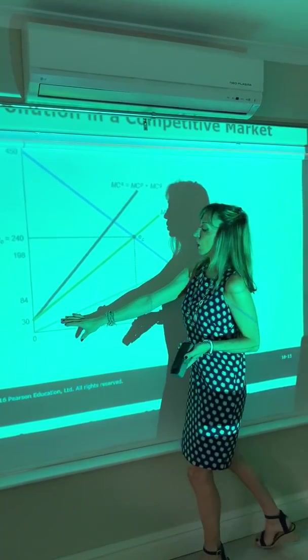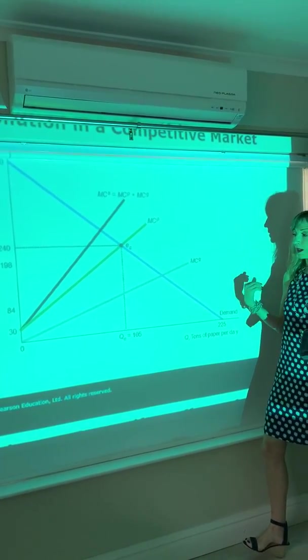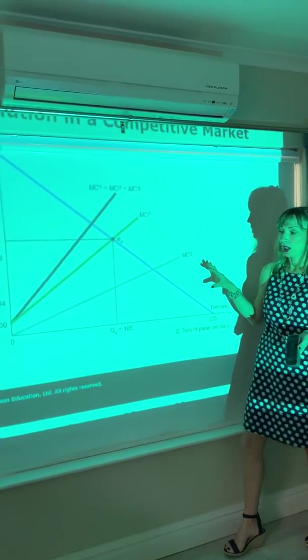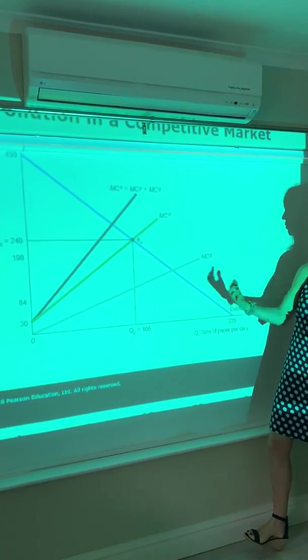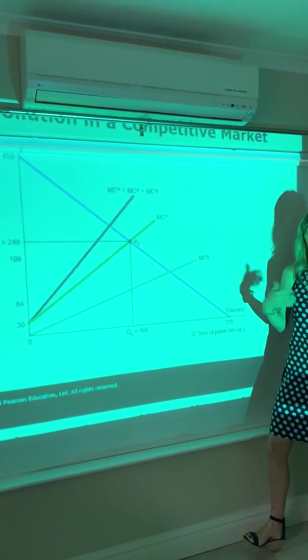This is the marginal cost of the negative externality that's generated in the process. We see that paper production goes hand in hand with the negative externality. So as more paper is produced, more pollution or negative externality, the textbook calls it gunk, is produced.